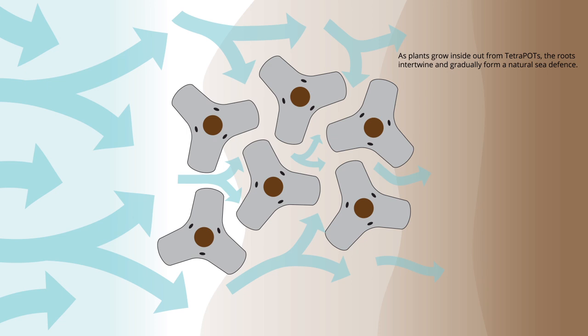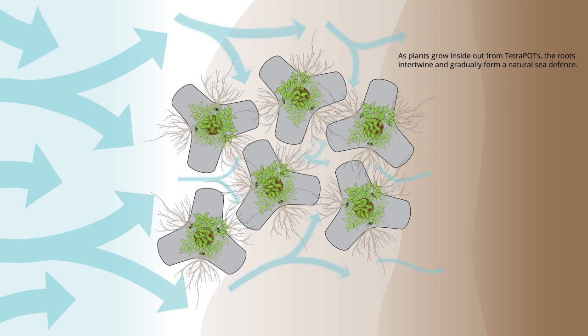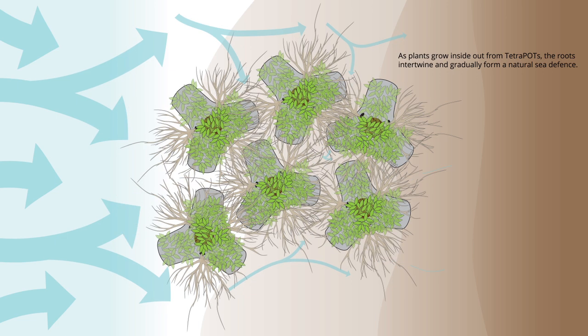As plants grow inside out from tetrapods, the roots intertwine and can gradually form a natural sea defense.